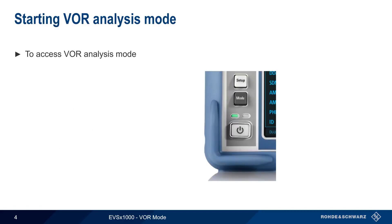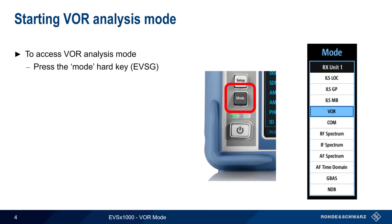To access VOR analysis mode on the EVS1000, simply press the Mode hard key on the front of the instrument and select VOR. If operating the EVS over VNC, press M and then use the down arrow to scroll through the list of available analysis modes.